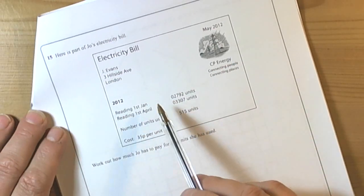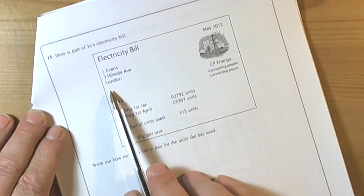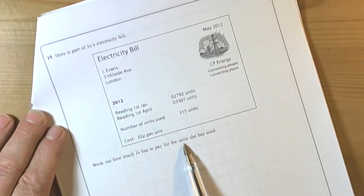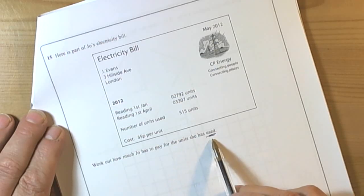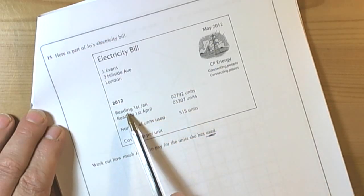This question is asking us to work with an electricity bill. We are going to work out how much Jo has to pay for the units she has used, so we will need to work out how many units she has actually used. Let's have a look.